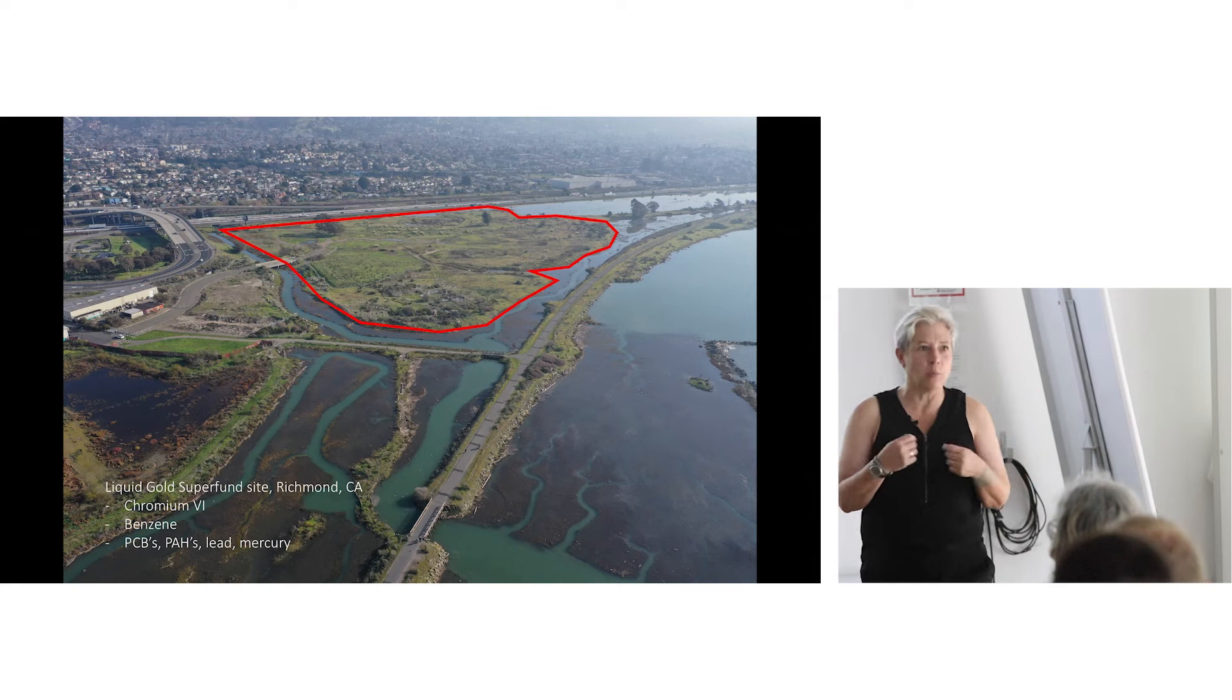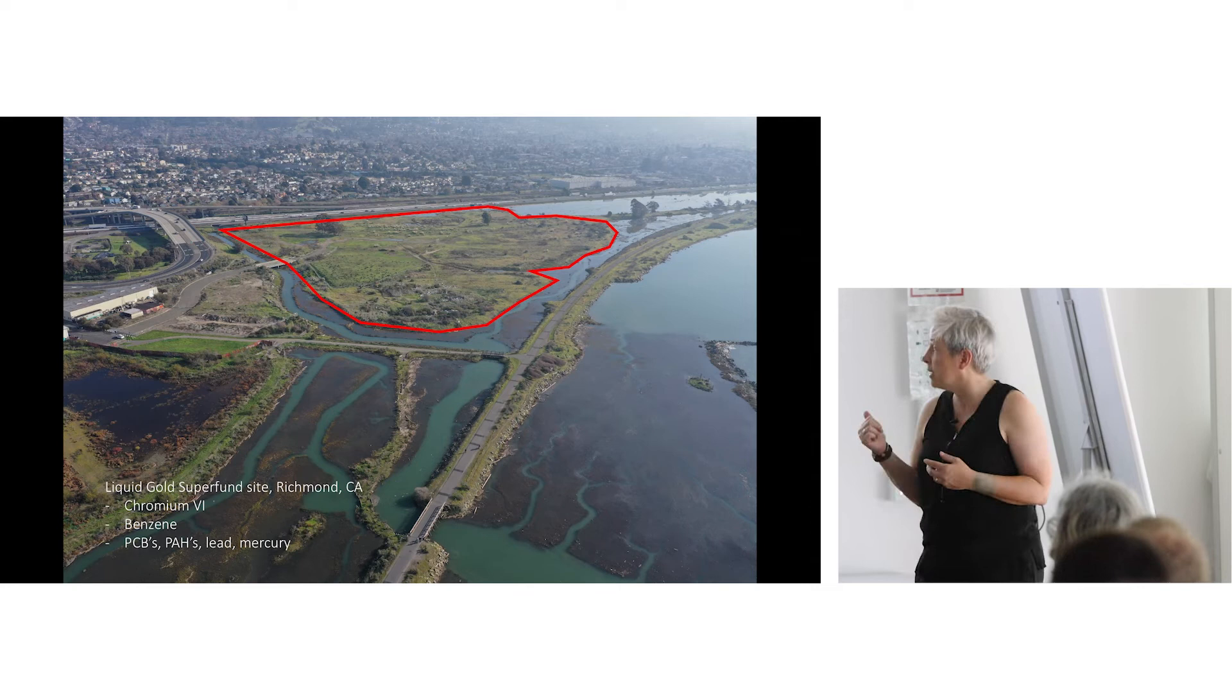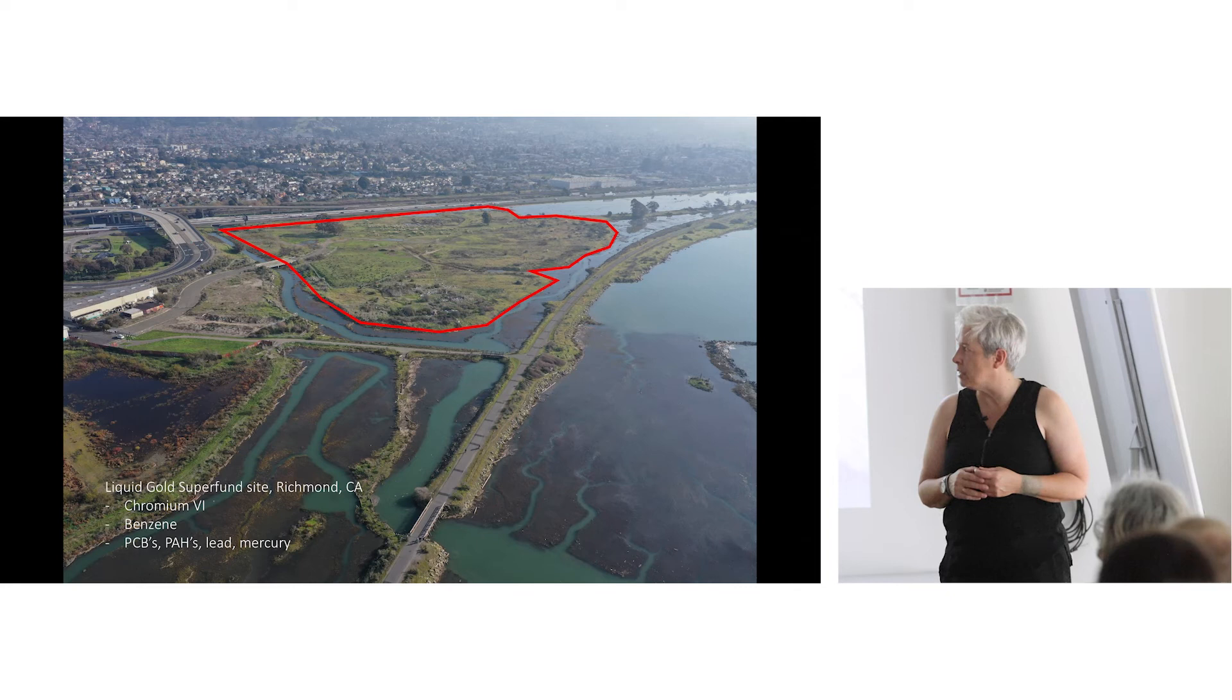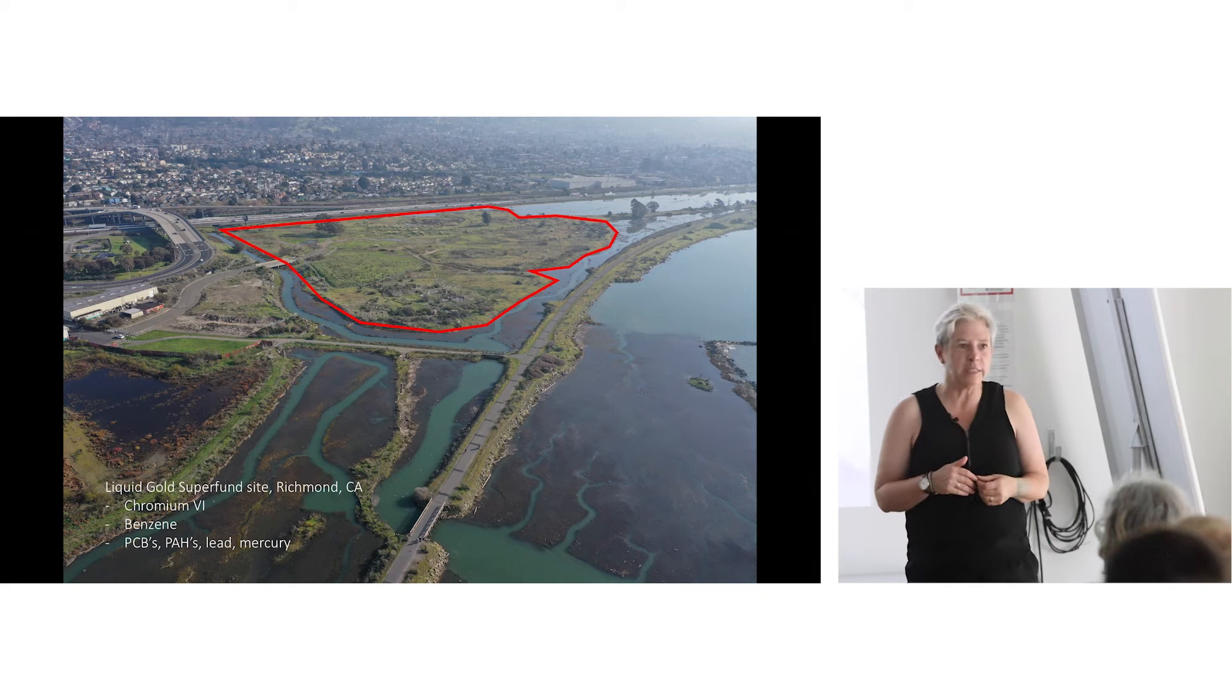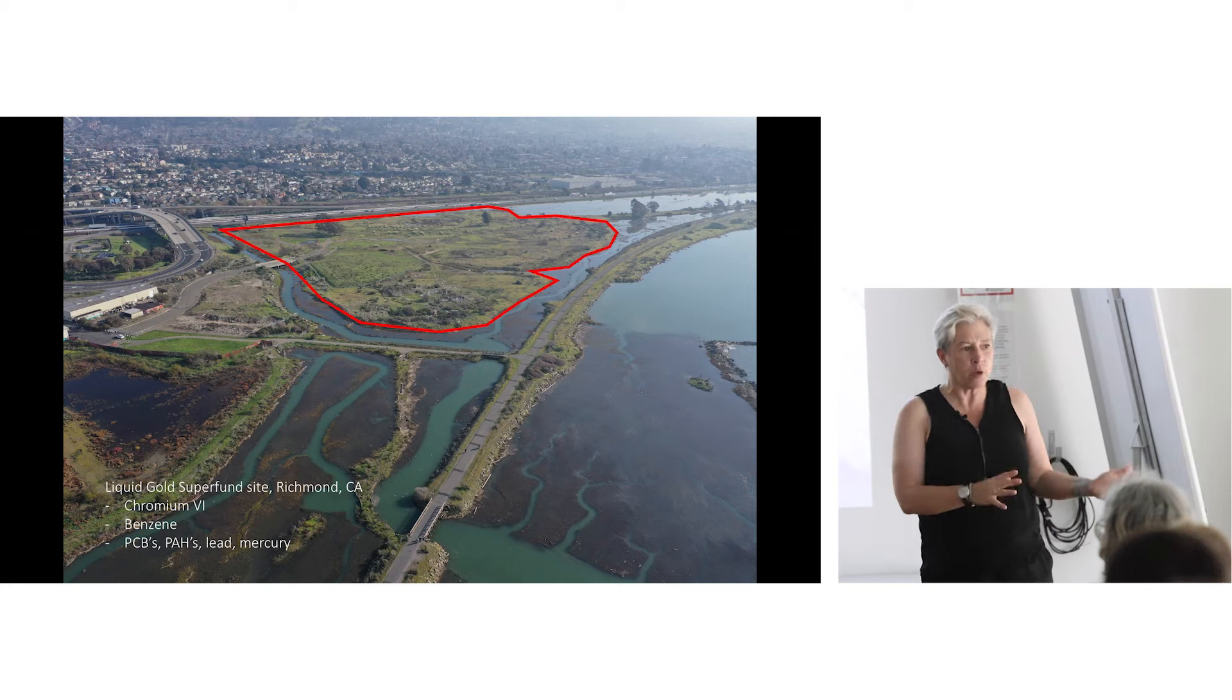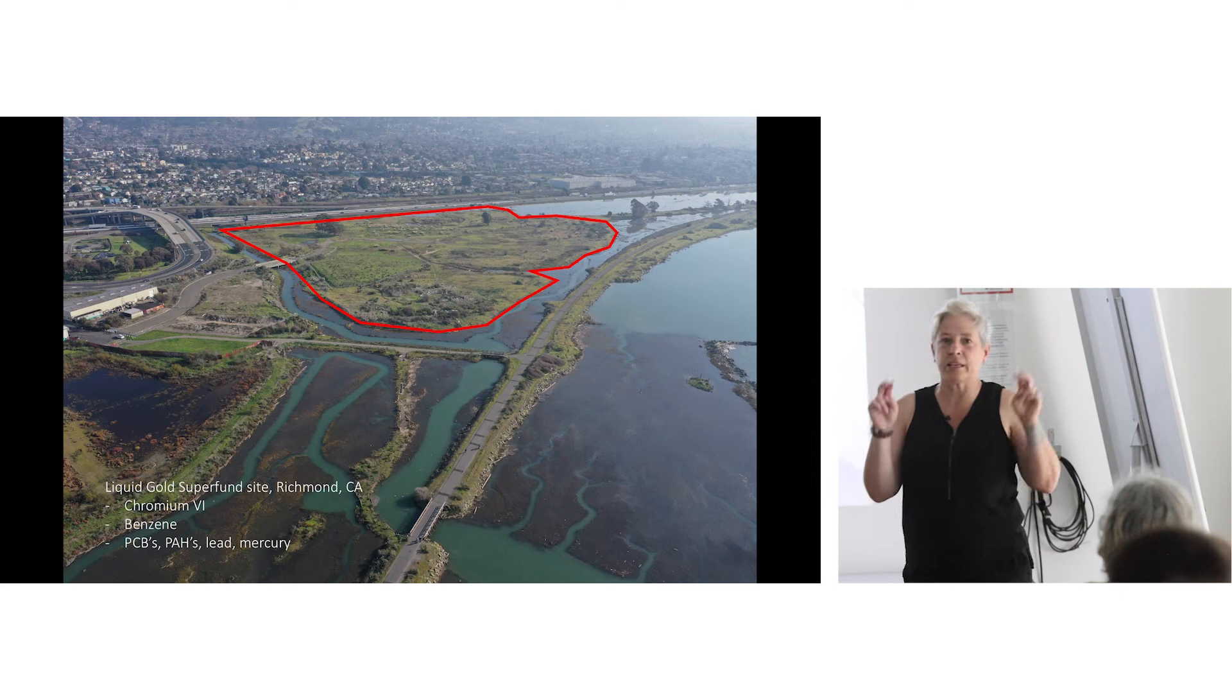These sites haven't really been fully cleaned up. Many of them are not cleaned up at all, even after 30 to 40 years since they were identified, because the private owners have had so many lawsuits with the government. This site has chromium-6, which is hexavalent chromium. If anybody has seen the movie Erin Brockovich, that's the contaminant that was featured in that film. Benzene, also a big carcinogen. PCBs, PAHs from batteries and oil and gas. And then lead and mercury.